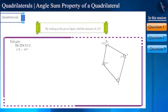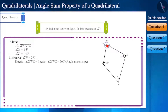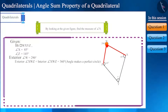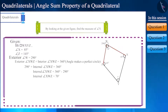Here we are given the measurement of two internal and one external angle of the quadrilateral and we have to find the remaining one angle. We will first find the measure of angle W. We know that when an angle forms a complete circle its measure is 360 degrees. Therefore the sum of the exterior angle XWZ and the interior angle XWZ will be 360 degrees. We are given the exterior angle XWZ as 290 degrees, so the interior angle XWZ is 70 degrees.